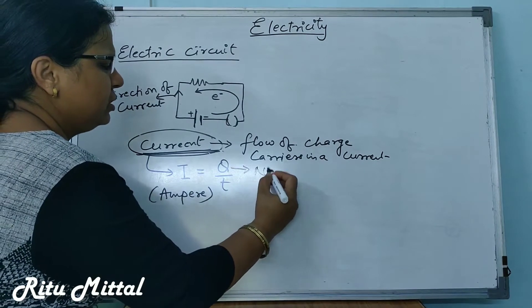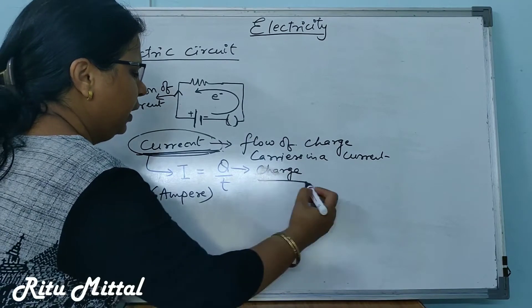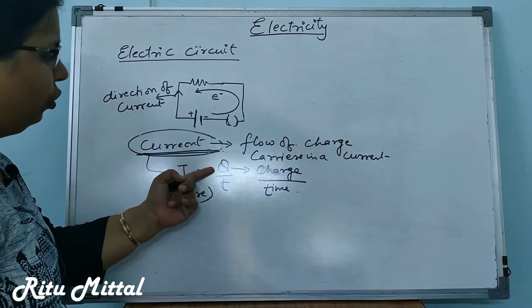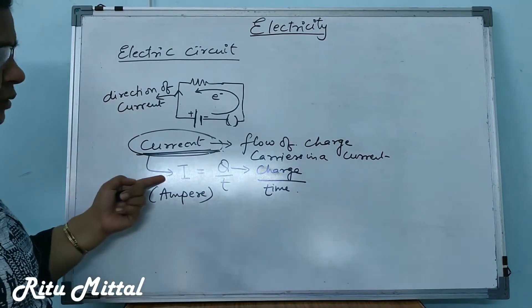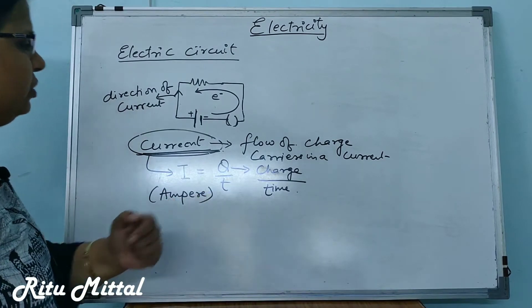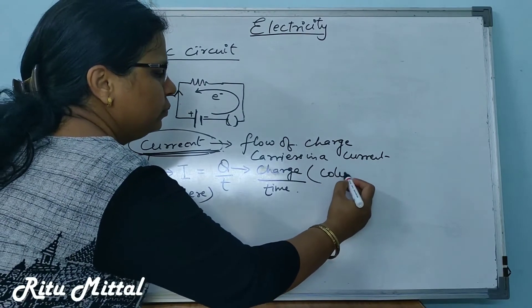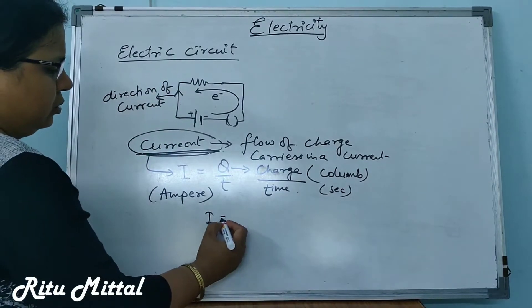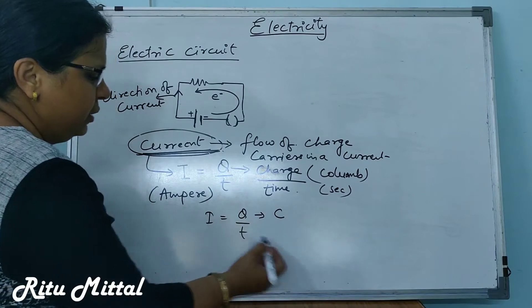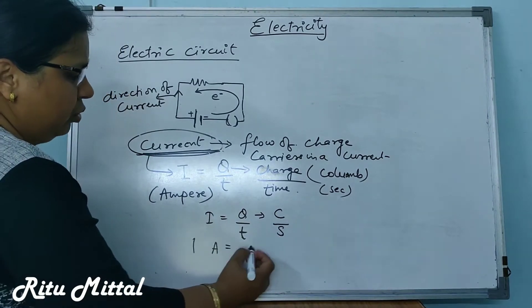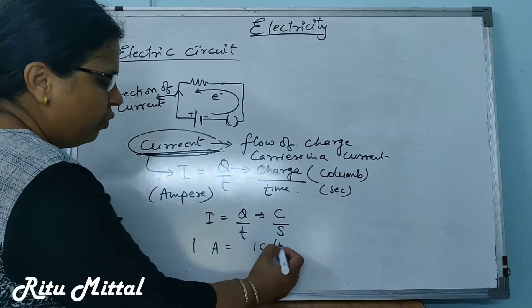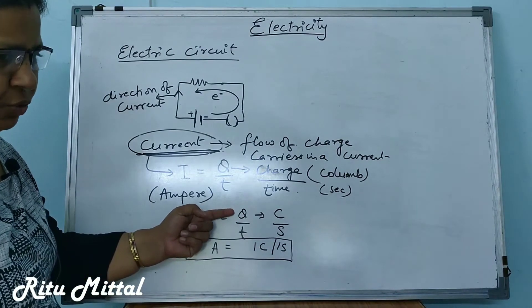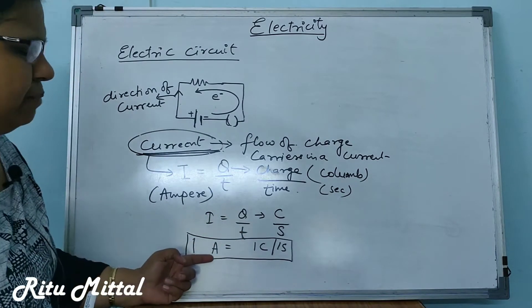Q is the charge and t is the time. Current is defined as the number of charge carriers that flow per unit time. The unit for charge is coulomb, and time is taken in seconds. So, 1 ampere is equal to when 1 coulomb of charge flows for 1 second — we say there is 1 ampere of current in the circuit.